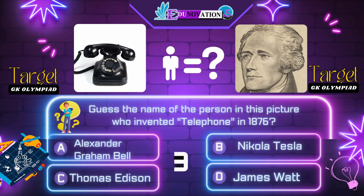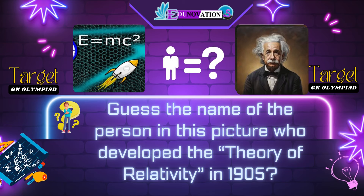Next question. Guess the name of the person in this picture who invented the first practical steam engine in 1712. Your options are: A. James Watt, B. Thomas Newcomen, C. George Stevenson, D. Nikola Tesla. Time's up. Correct answer is B. Thomas Newcomen.